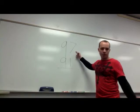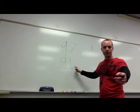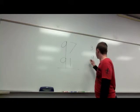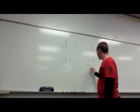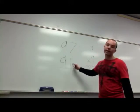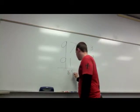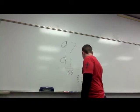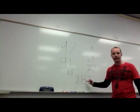97 is 3 away from 100. 91 is 9 away from 100. 3 times 9 is 27. 97 minus 9, or you can say 91 minus 3, doesn't matter. You get 88 again. And that's it. 88, 27.